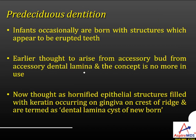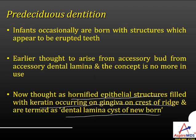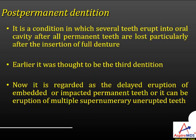Pre-deciduous dentition is not the same as natal or neonatal teeth. Pre-deciduous dentition is a condition where infants are born with structures appearing to be erupted teeth. They were once thought to arise from accessory dental lamina, but are now considered hornified epithelial structures filled with keratin on the crest of the gingival ridge — termed dental lamina cysts of the newborn. Post-permanent dentition occurs when several teeth erupt into the oral cavity after permanent teeth have exfoliated or been extracted — now regarded as delayed eruption of embedded or impacted permanent teeth, or eruption of multiple supernumerary unerupted teeth.